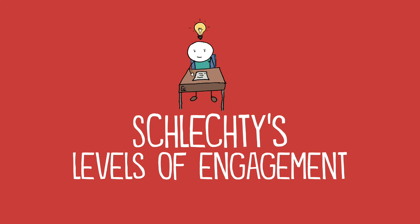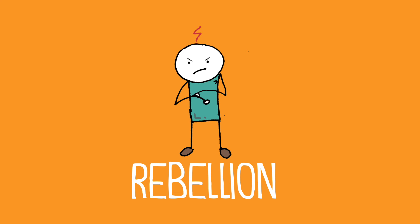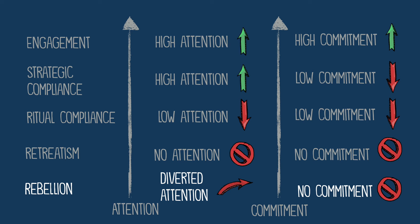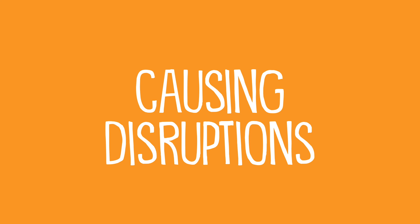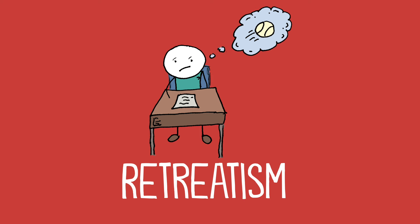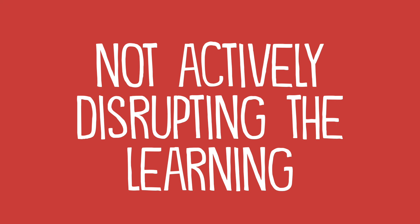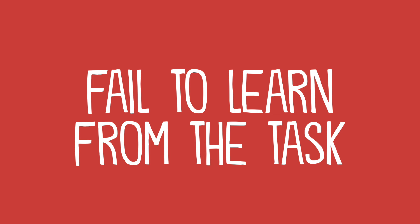In 2002, Philip Schlechti developed a framework for thinking about student engagement based on two core ideas of attention and commitment. At the bottom, you have rebellion, which involves diverted attention and no commitment to the task — this is the student who seems to be acting out and causing disruptions, and as a result, fails to learn from the task. Next, you have retreatism, with no attention and no commitment. Unlike rebellion, this student is not actively disrupting the learning, but instead seems checked out, often distracted and emotionally withdrawn, and as a result learns little or nothing from the task.